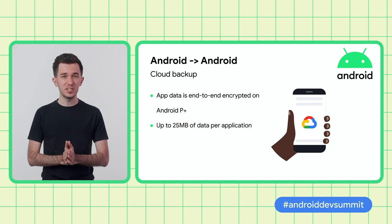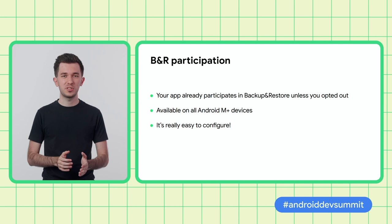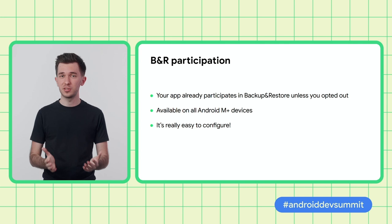This mode will back up to 25 megabytes of data for each participating app on the device. On the previous slides, I said that we transferred data for apps that participate in Backup and Restore. What does that mean? Backup and Restore is already enabled for all apps on Android M and later, unless you explicitly opt out. You can control and customize its behavior very easily, and we'll look at how to do that later in the talk.